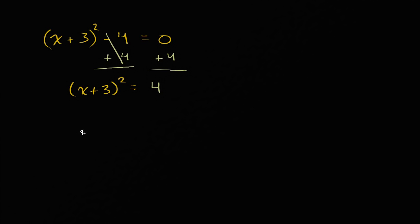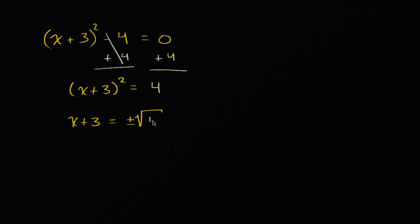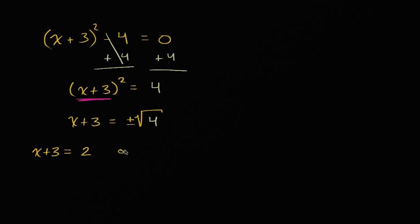Now I could take the square root of both sides. Another way of thinking about it: if I have something squared equaling four, I could say that something needs to be either positive or negative two. So x plus three is going to be equal to the plus or minus square root of four. That means this something is going to be equal to the positive square root of four or the negative square root of four — positive or negative two. So x plus three could be equal to positive two, or x plus three could be equal to negative two.